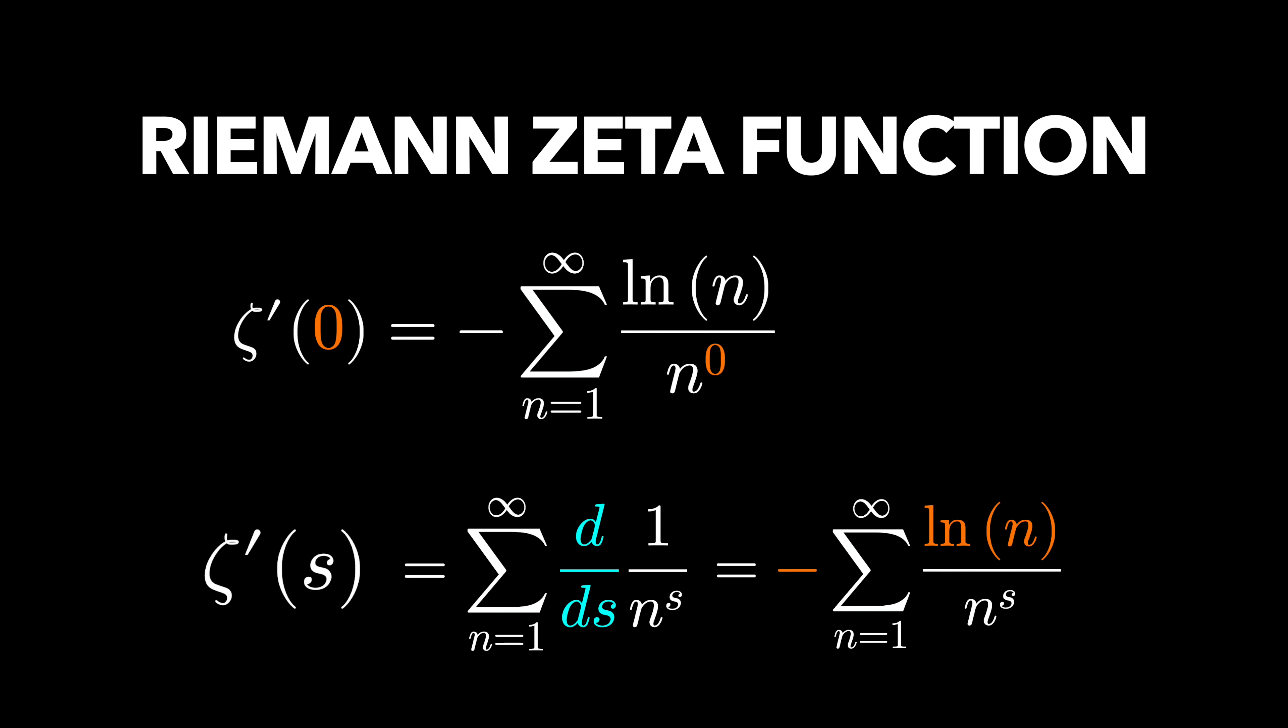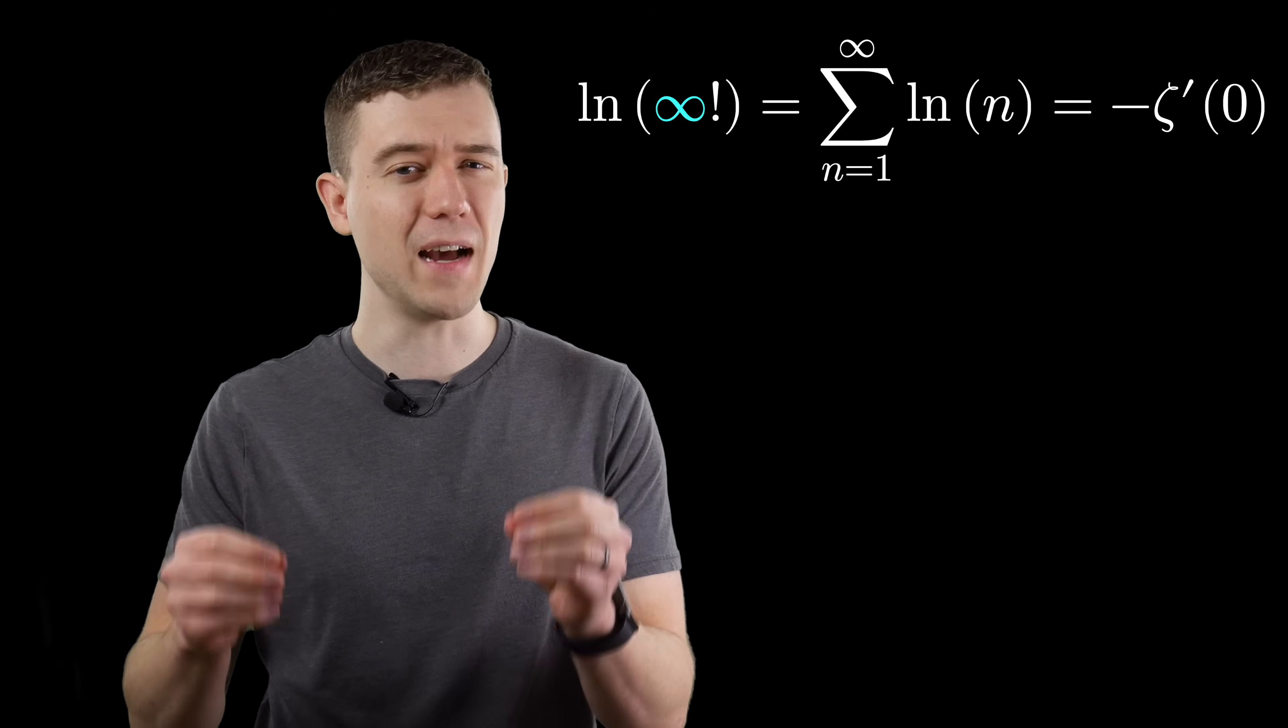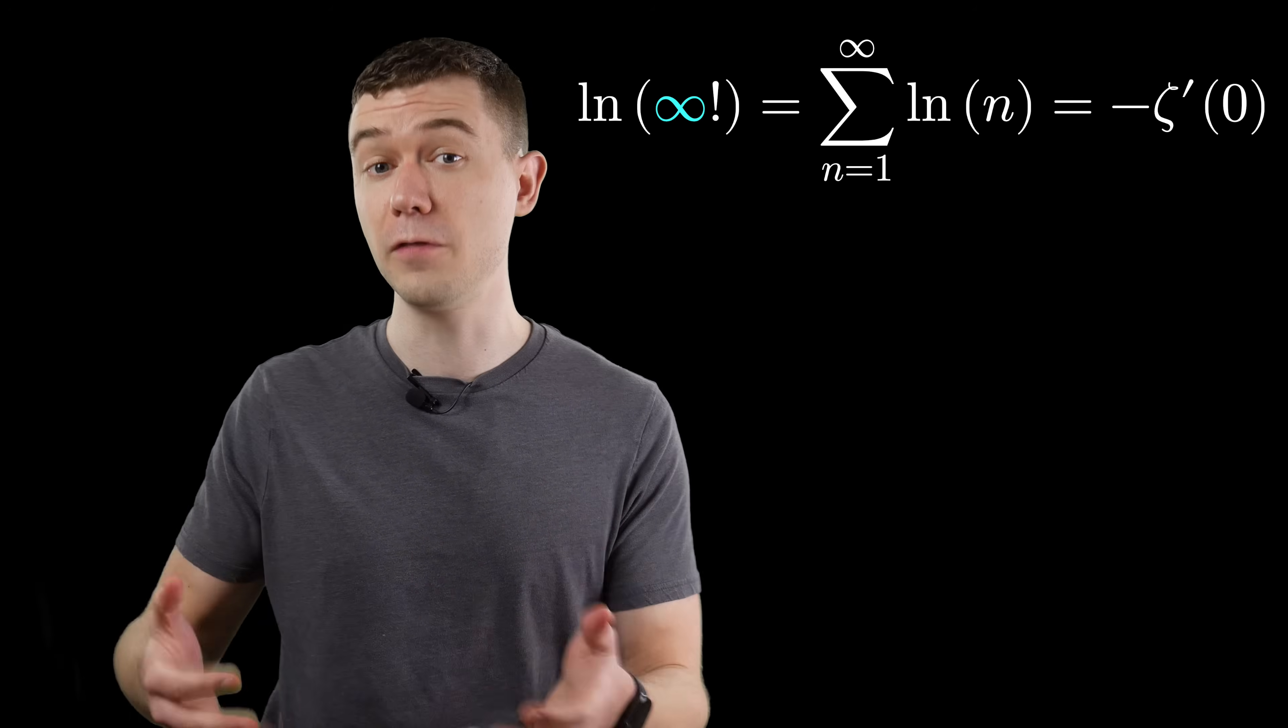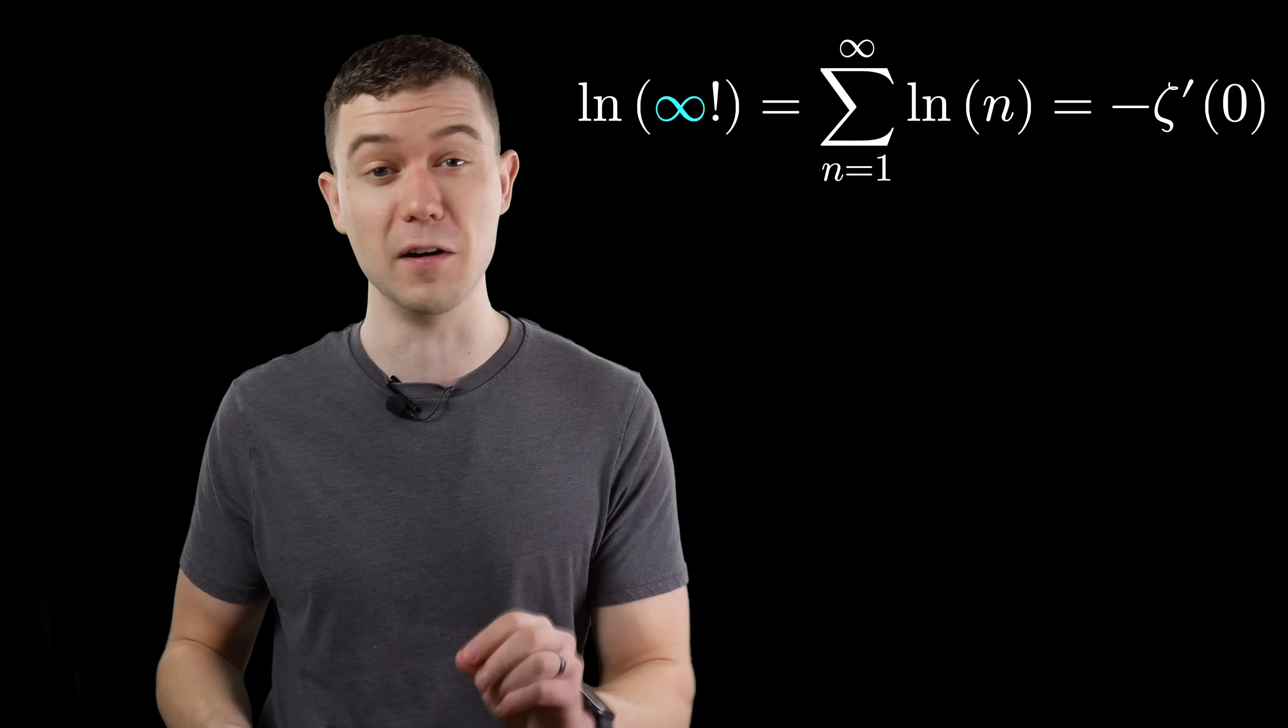Now, substituting s equals zero gives us the negative of our sum in question. So we can say that the natural log of infinity factorial is equal to the negative first derivative of the Riemann zeta function at zero.